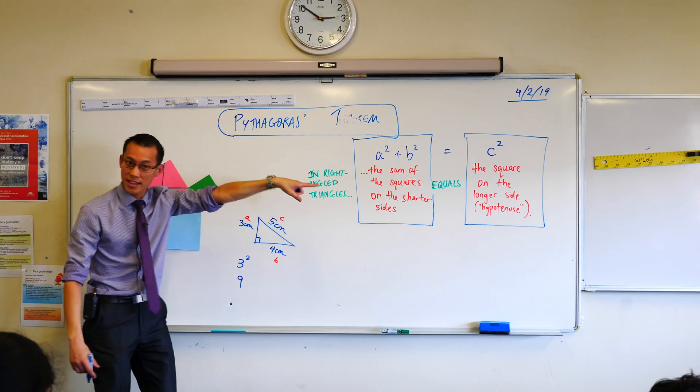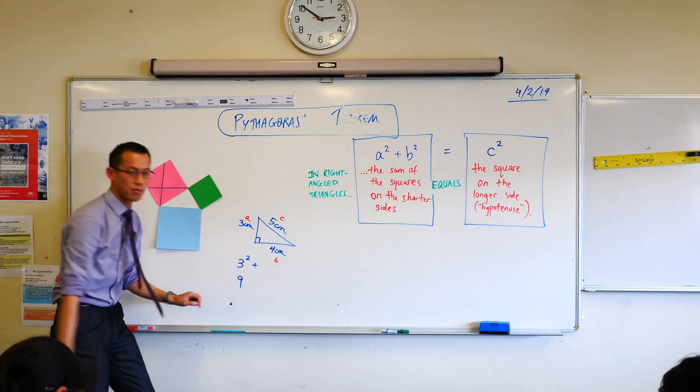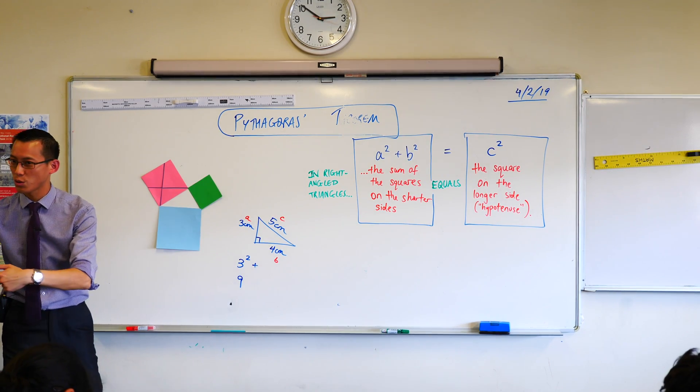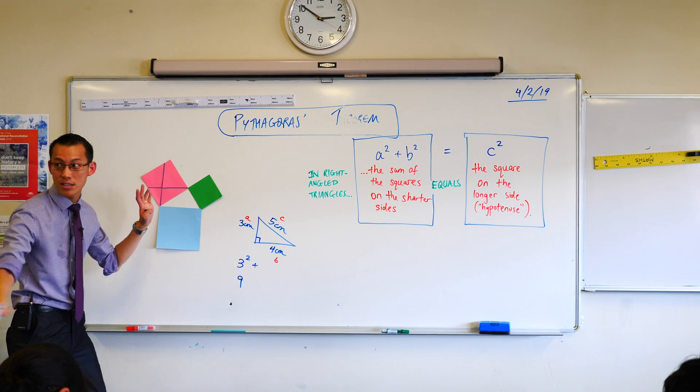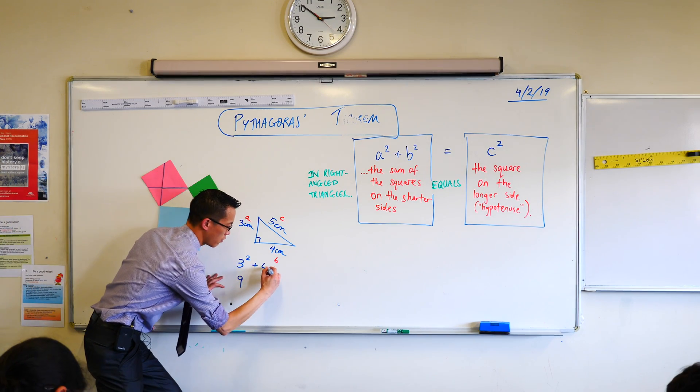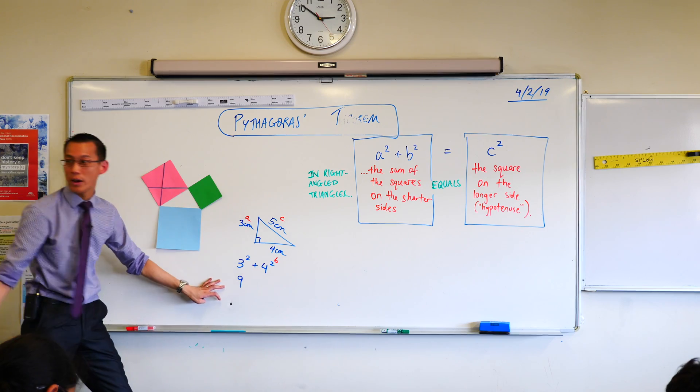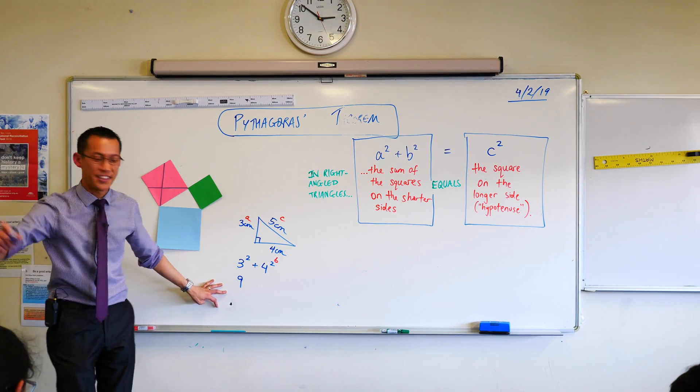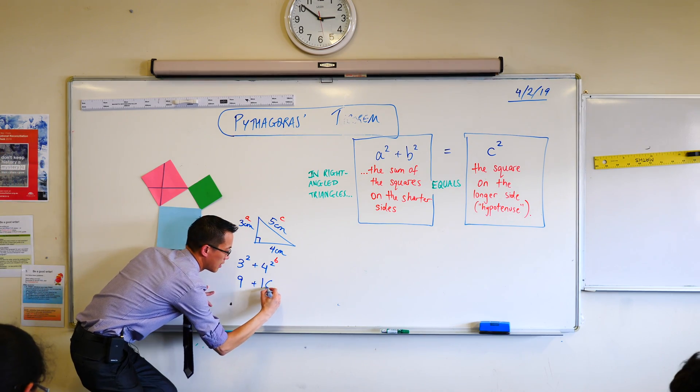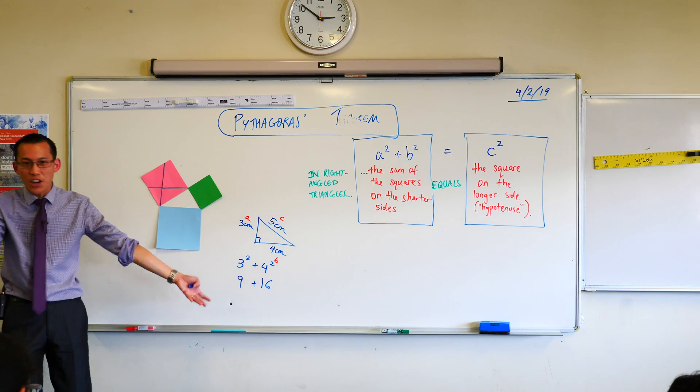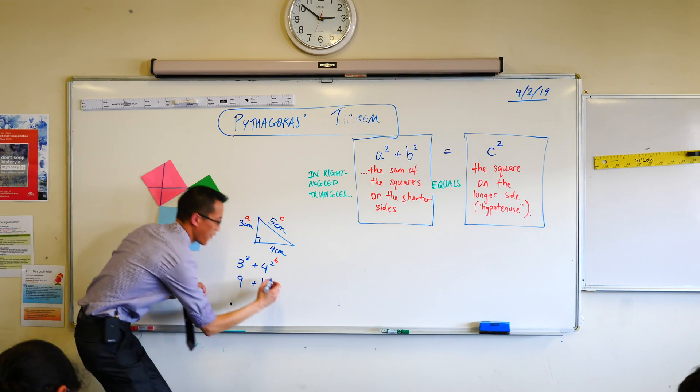In Pythagoras theorem, the next thing I do is I say plus B squared. That's the next sort of sign. In this case, B is four. So B squared is four squared. What's that equal to? Yeah, 16. Very good. Nine plus 16. Now we know what nine plus 16 is, right? It's 25.